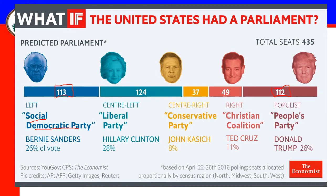That percentage determines how many seats in the legislature each party would get. The liberal center-left party represented by Hillary Clinton at 28% would get 124 seats out of 435. Smaller groups like John Kasich and Ted Cruz representing the center-right would have their own portion. It would be based on a percentage basis of votes received determining House seats, creating a split government with no one giant ruling party — power spread out more thinly across the board.